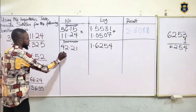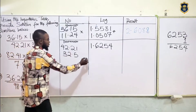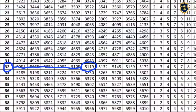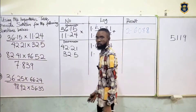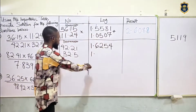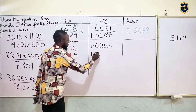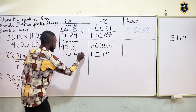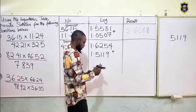The other one we have is 32.5. We move once, so it's 1 point. Log 32 under 5 should be what? Look at your log table — 32 under 5 is 5119. We don't have a difference because it's just three numbers — no difference. So it's 32 under 5, 5119. And because they are multiplying in the denominator, we are going to add.